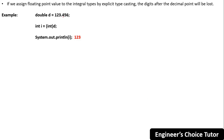If we assign a floating-point value to an integral type by explicit typecasting, the digits after the decimal point will be lost. For example: double d = 123.456, then int i = (int) d. When we print i, the output will be only 123 — everything after the decimal point is discarded. This is all about primitive data type conversions and primitive data type casting.